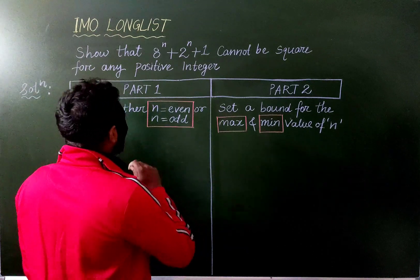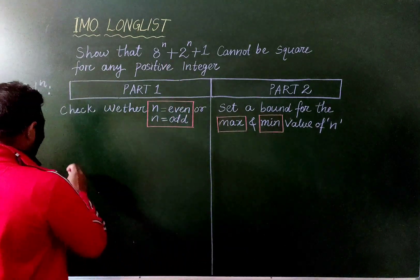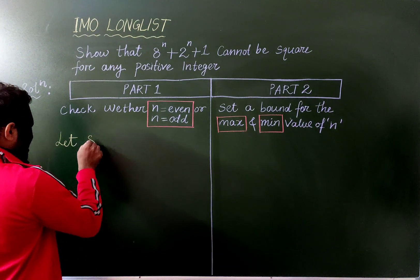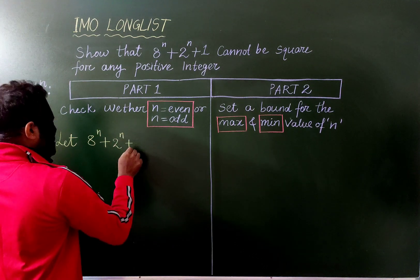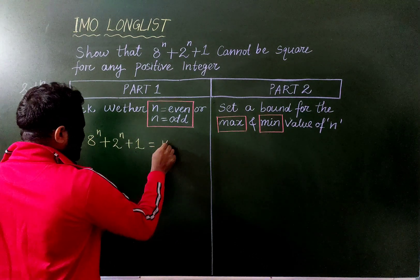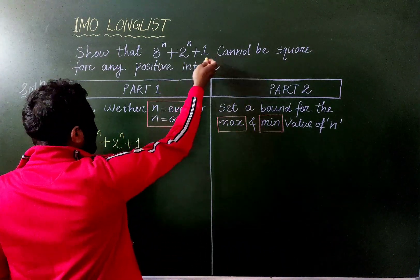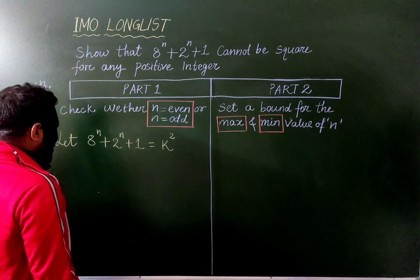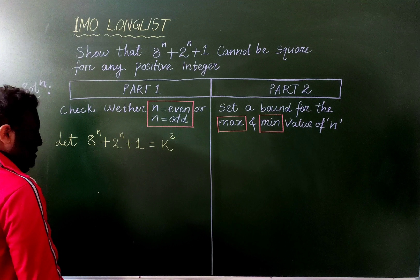So how do we check for even or odd? The best way: let's assume that 8 to the power n plus 2 to the power n+1 equals k squared for some integer k — that is, assume this expression is a perfect square. Now let's take mod 3.